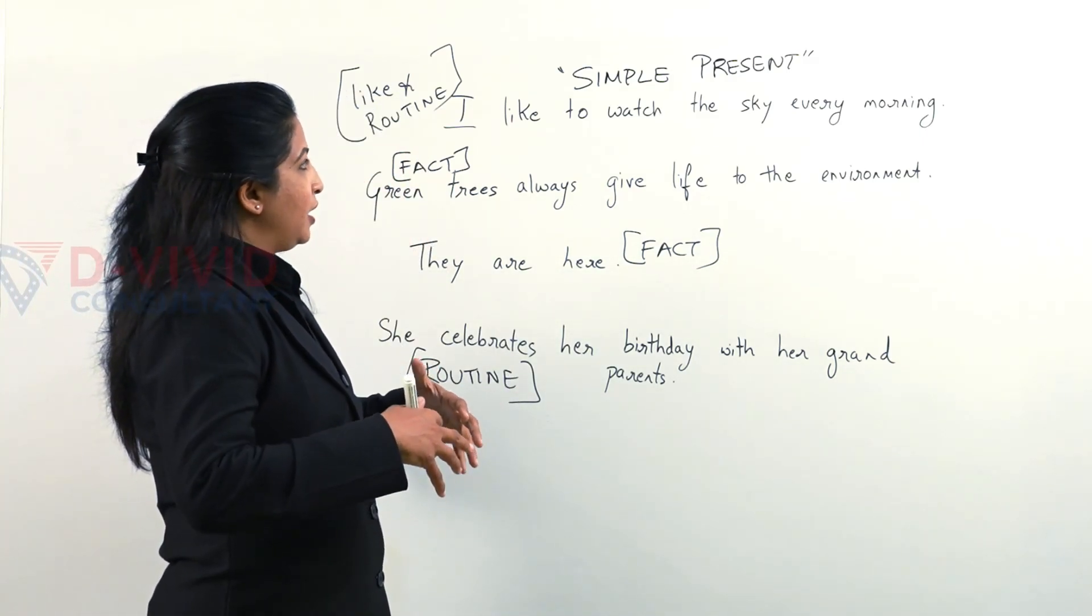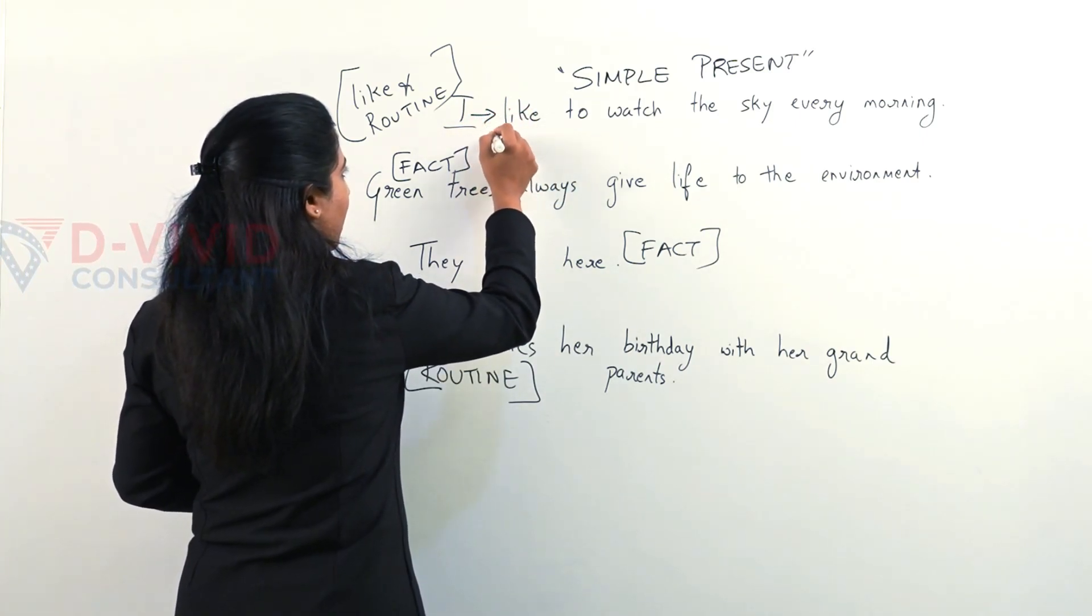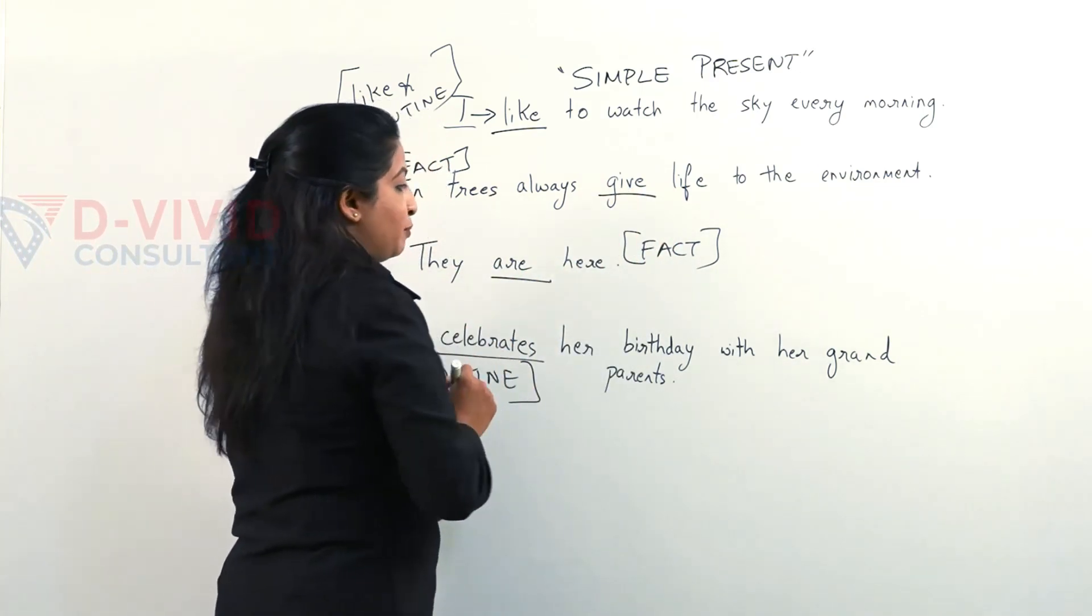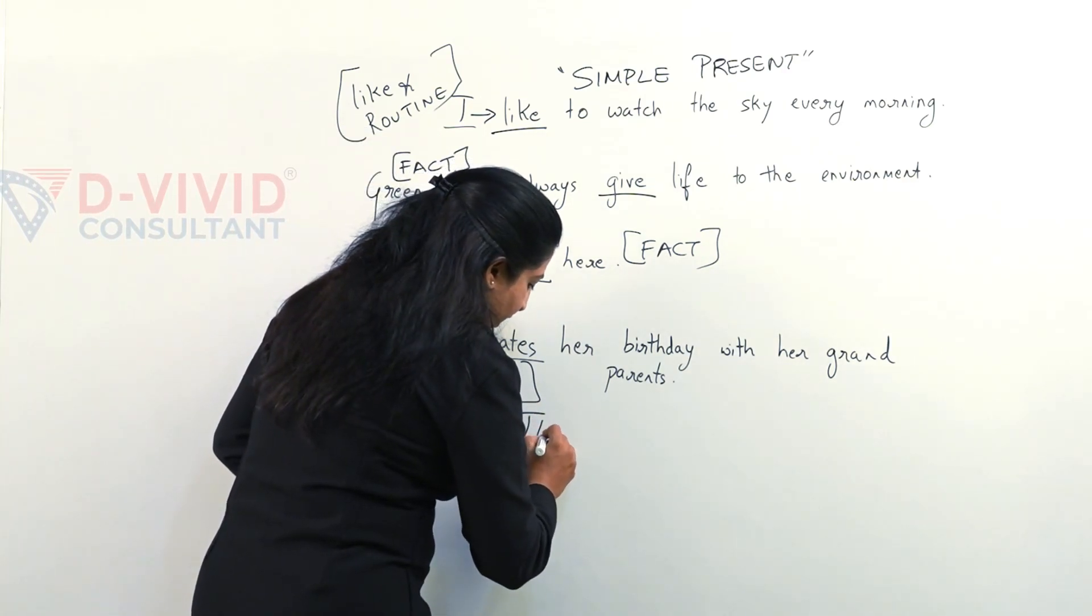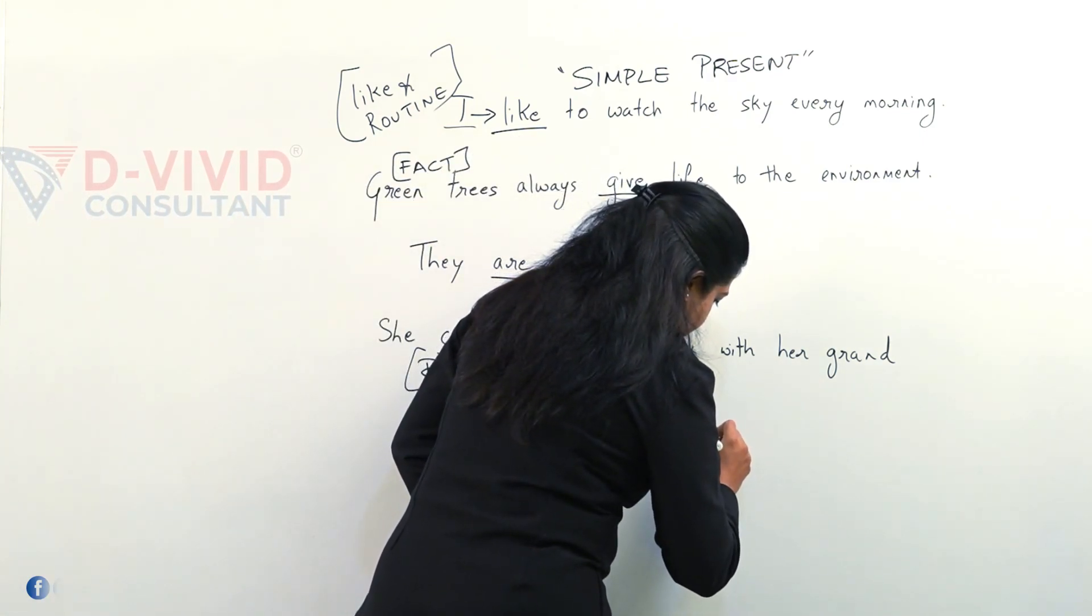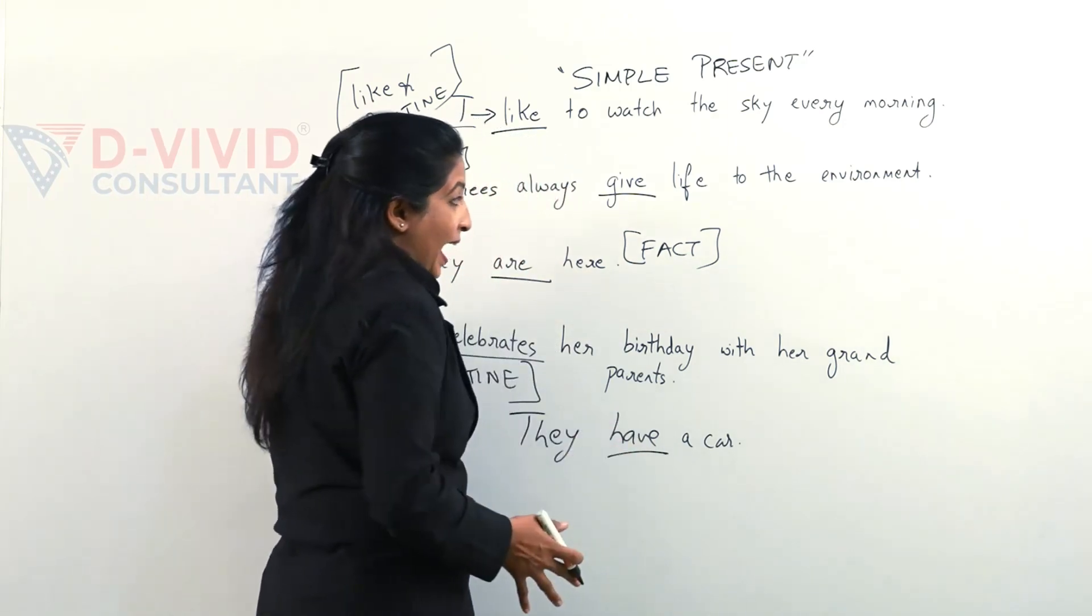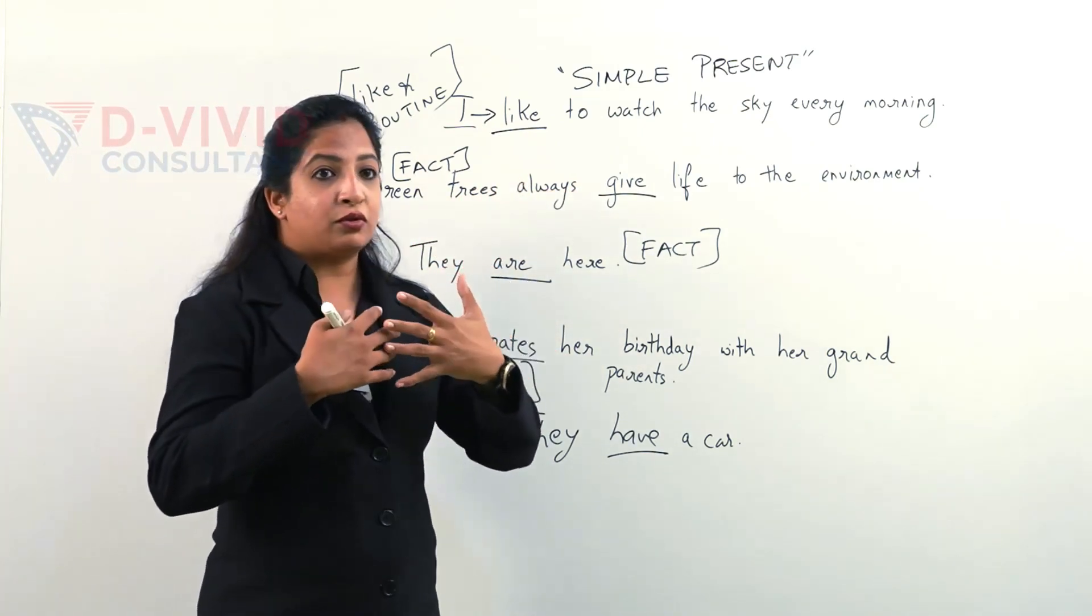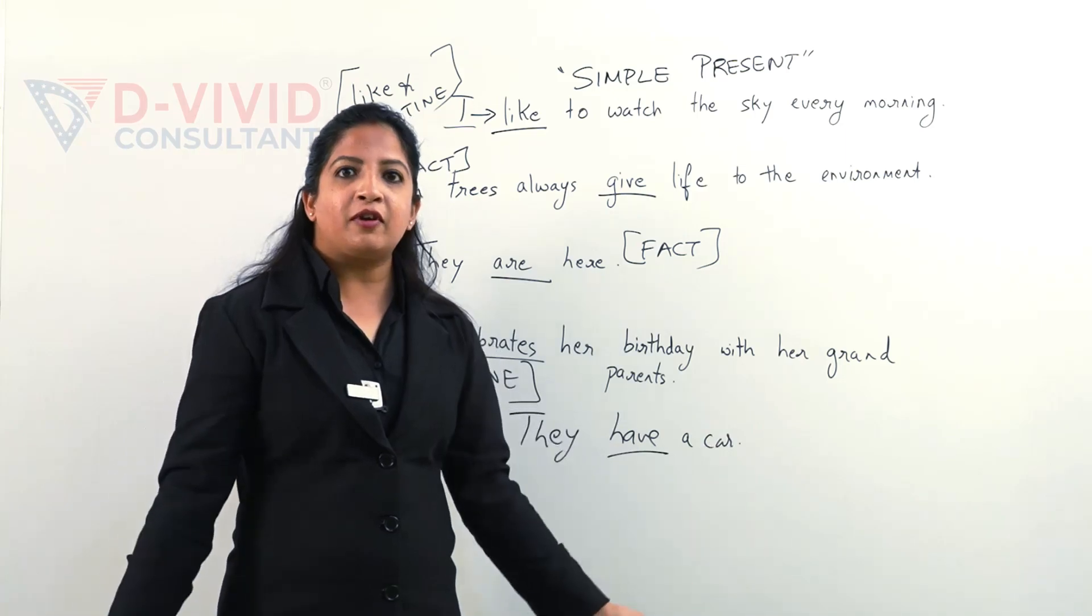So if you closely see the verbs of simple present, I have used like, give, are, celebrates. What if I add one more sentence to it? They have a car. A very simple sentence. Now here my verb is have. So if you focus the verb, I have also taken the action verbs. I have also taken are. I have also taken have. Everything is here.